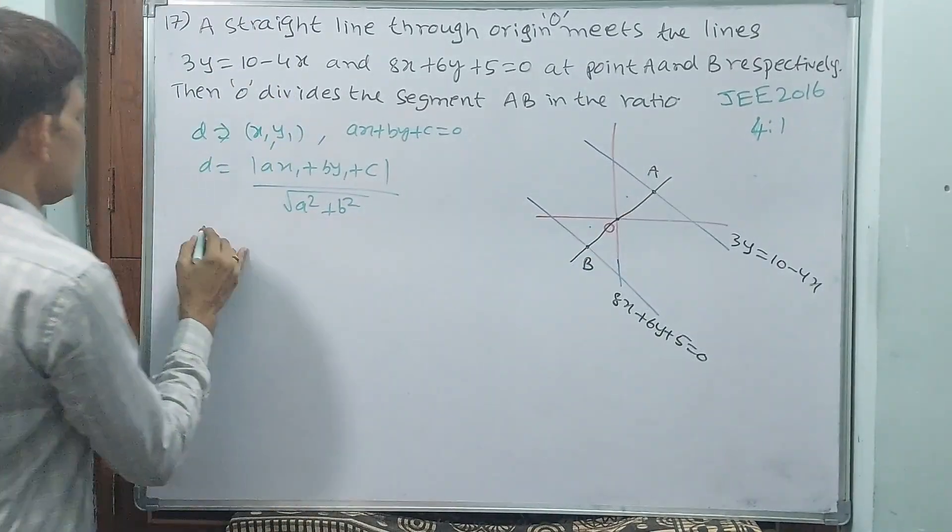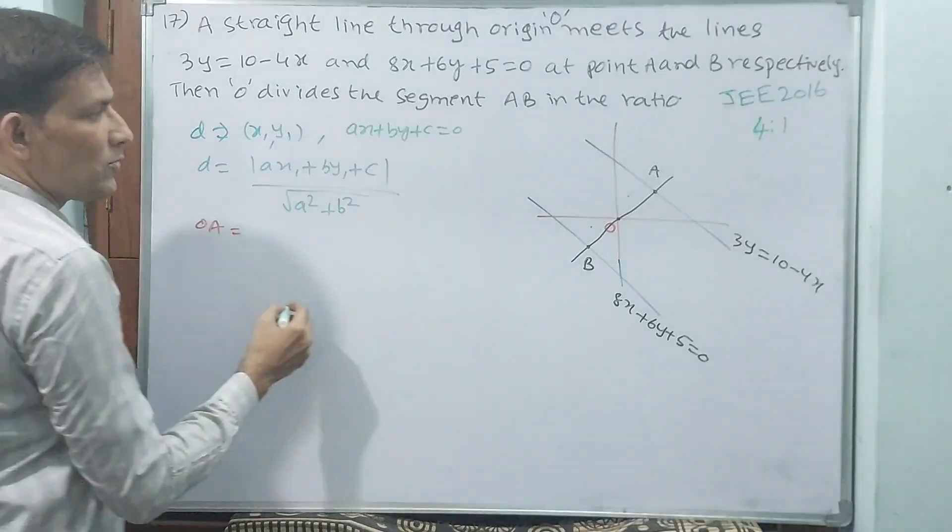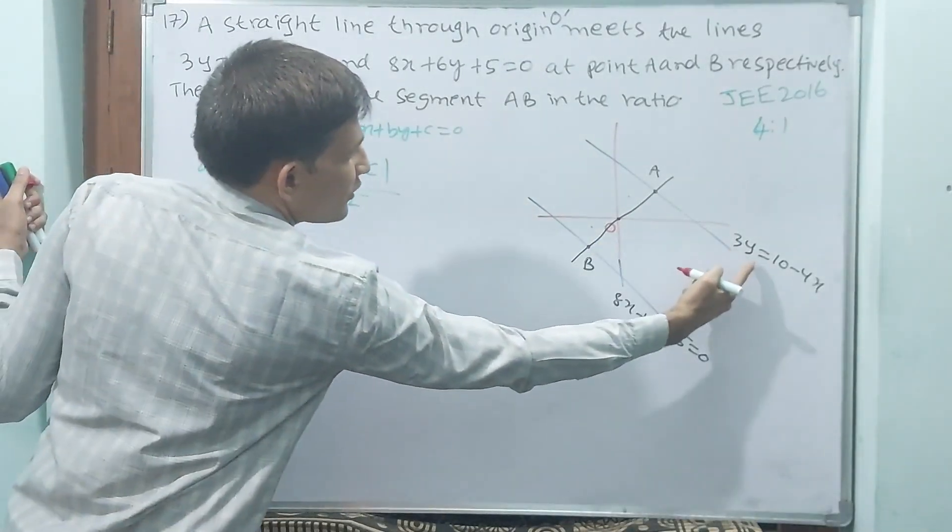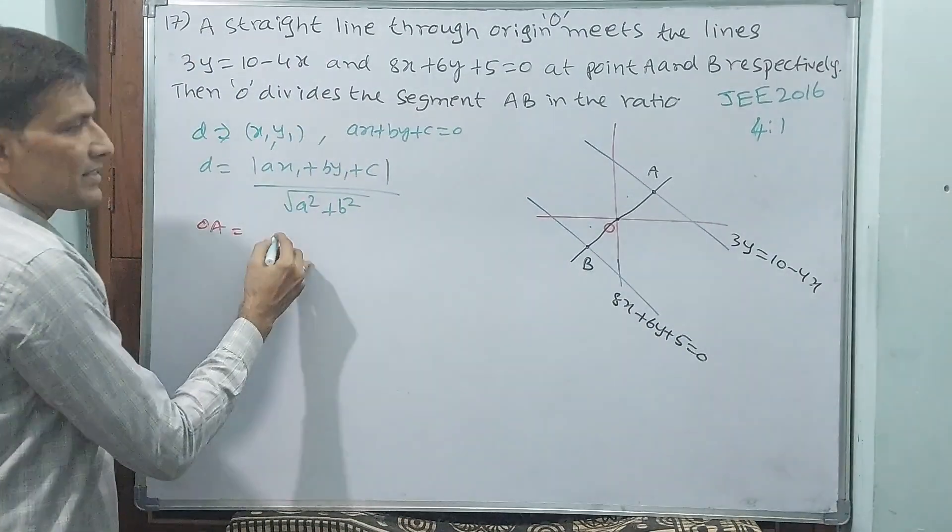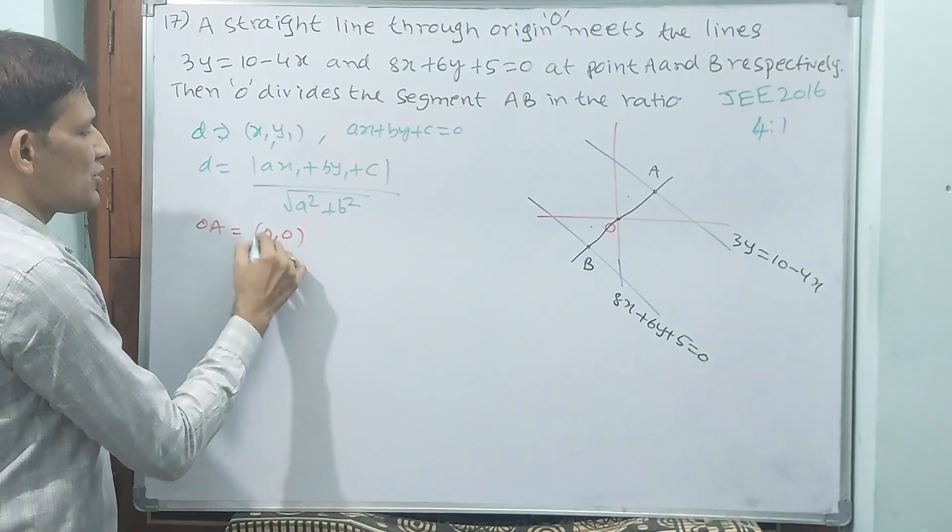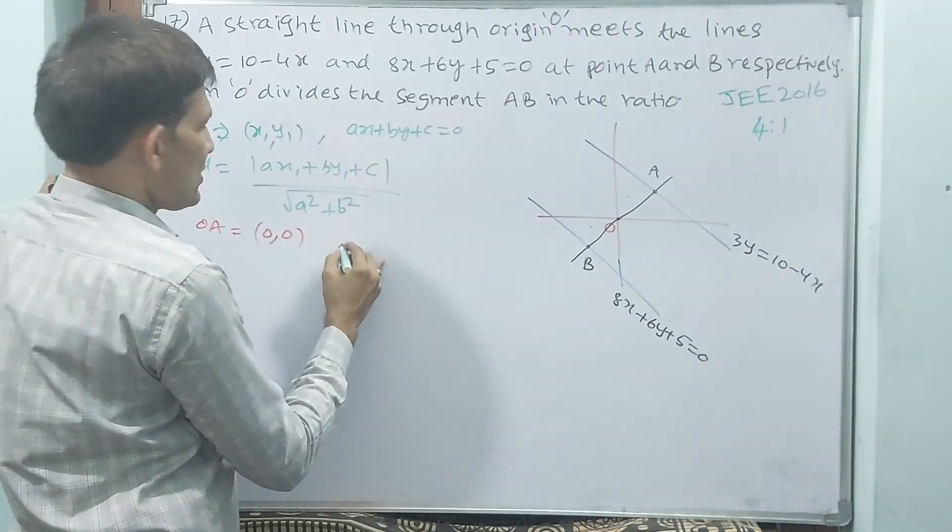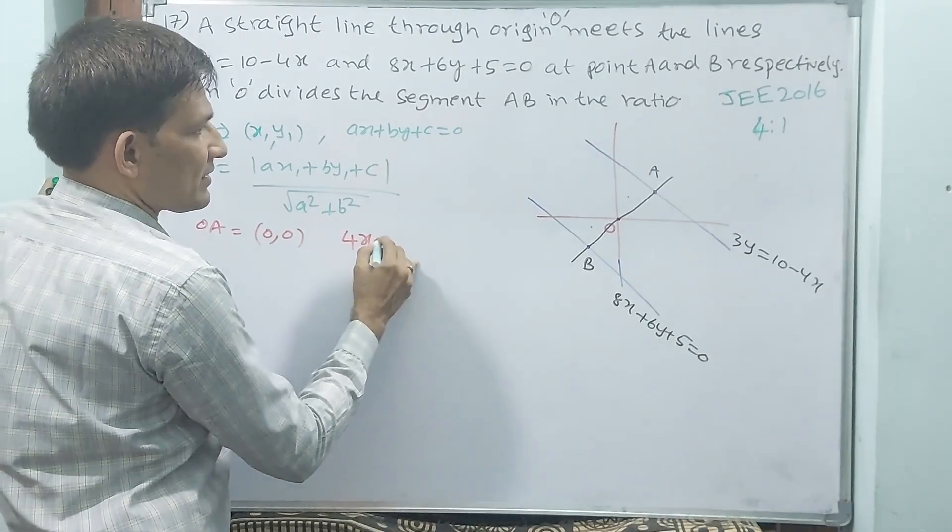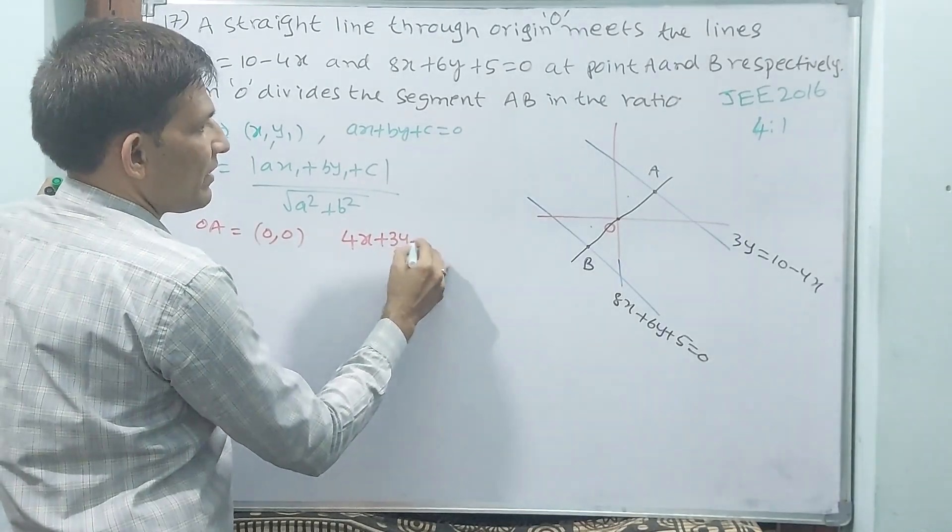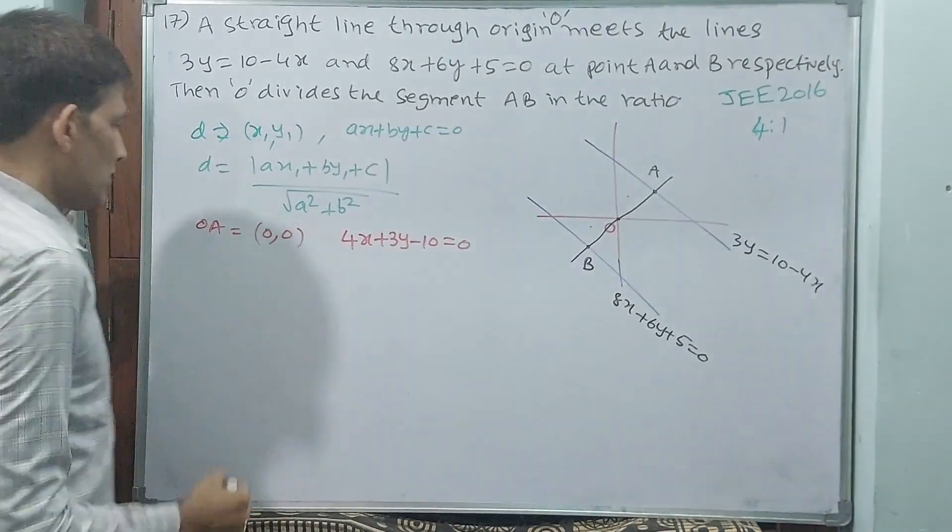Now I am finding OA distance. See, the origin is (0, 0). The equation, if I bring 4x to this side, is 4x + 3y - 10 = 0.